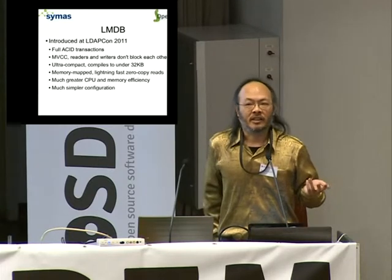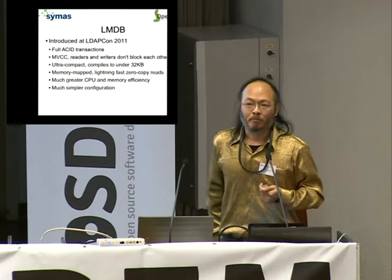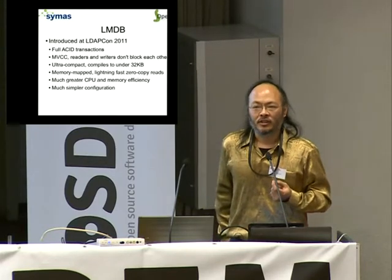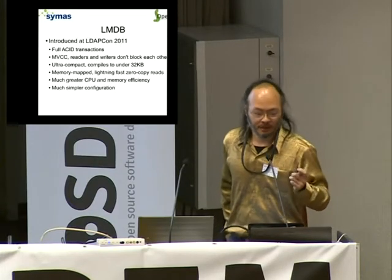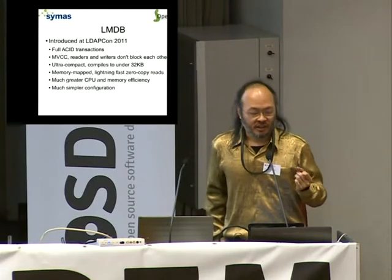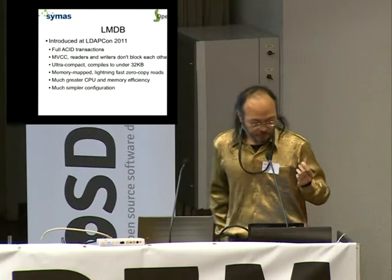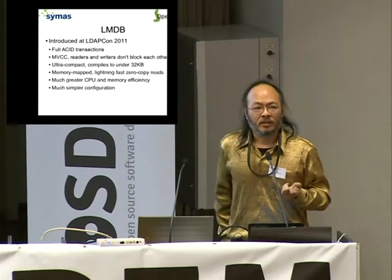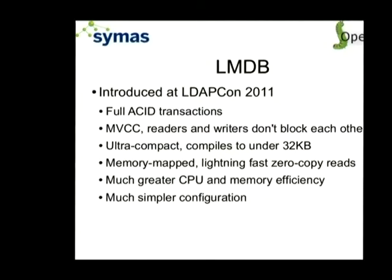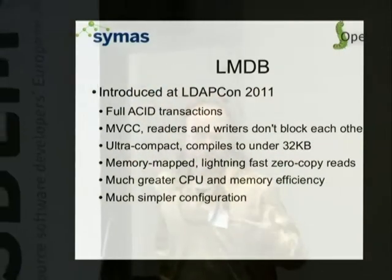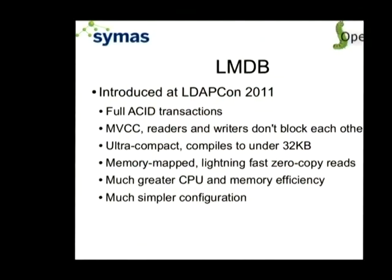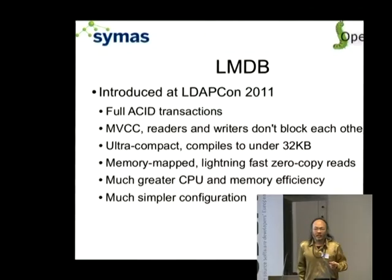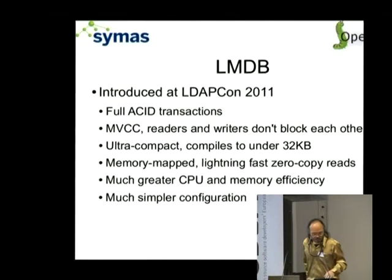How many of you have heard of LMDB, Lightning Database? We first introduced this back in the fall of 2011 at the LDAPCon in Germany. It's a very lightweight database with full ACID transactions. It uses multi-version concurrency control. It's extremely compact — the binary for this library compiles down to less than 32 kilobytes of object code on x86-64, and size is comparable for ARM. It uses a memory-mapped file and can perform zero-copy reads, so when you access a data record from the database, you get it directly from the kernel's page buffers. It's extremely high efficiency and extremely simple.